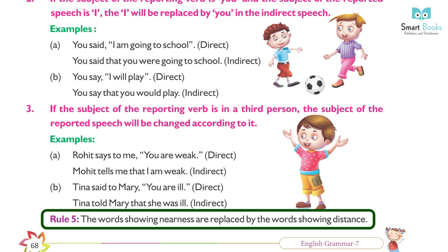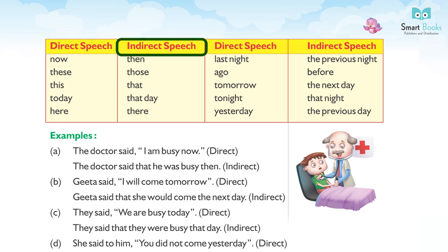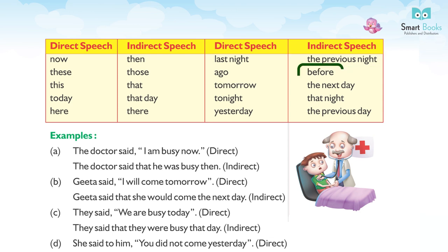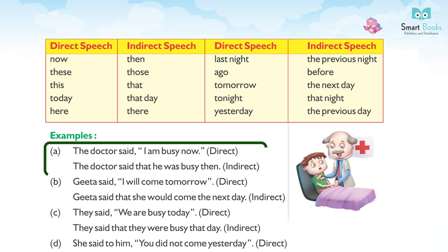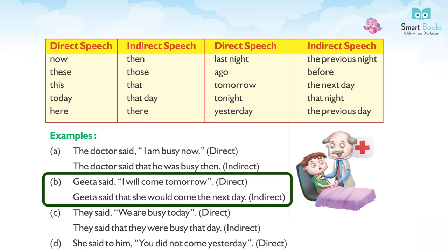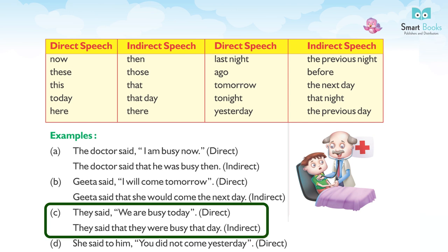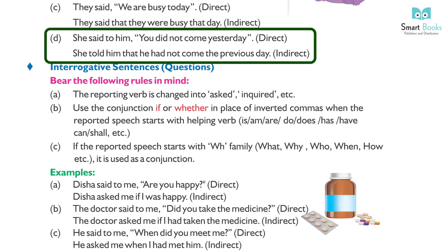Rule 5: Words showing nearness are replaced by words showing distance. Direct → Indirect: now → then, these → those, this → that, today → that day, here → there, last night → the previous night, ago → before, tomorrow → the next day, tonight → that night, yesterday → the previous day. Examples: (a) 'I am busy now.' → He was busy then. (b) 'I will come tomorrow.' → She would come the next day. (c) 'We are busy today.' → They were busy that day. (d) 'You did not come yesterday.' → He had not come the previous day.